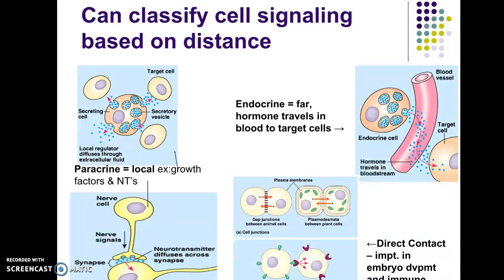You have what's called a signal transduction pathway and there are three different phases: the perception phase, the transduction phase, and then the response phase. You can think about it as like sending a text message to your friends. You sending the message — you're the ligand, you're the signaling molecule — and you're sending this message. And this message is being received by the phone.